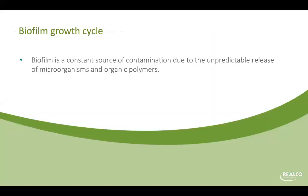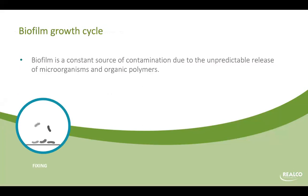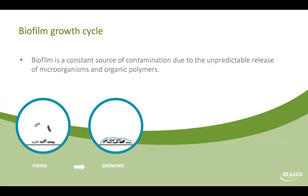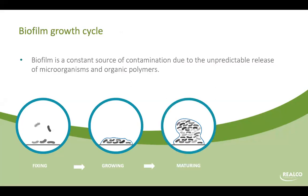The biofilm growth cycle always starts with a planktonic cell — a free microorganism present in the environment. Those germs will try to attach and fix themselves on a surface — it can be stainless steel, plastic, or glass. After that, the role of these germs is to multiply and develop the EPS matrix — this is a growing phase. At that time, biofilms are not visible because they are not releasing anything into the finished product. Then comes the maturing phase, where the biofilm develops into a three-dimensional structure with canals for feeding the biofilm and evacuating residues.